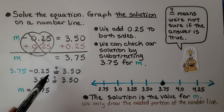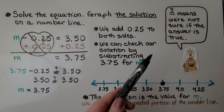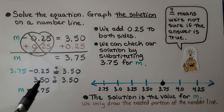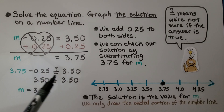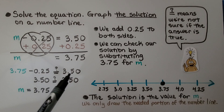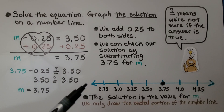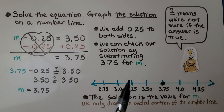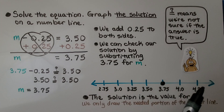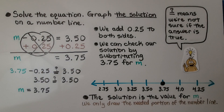We can write a question mark over the equal sign showing that we're not sure if the answer is true. We do the subtraction and see it is equal to 3 and 50 hundredths, so we know m is equal to 3 and 75 hundredths. We need to graph the solution on a number line. We graph 3 and 75 hundredths, with a couple of marks before it and a couple after it, so it's not right on the edge of the number line.